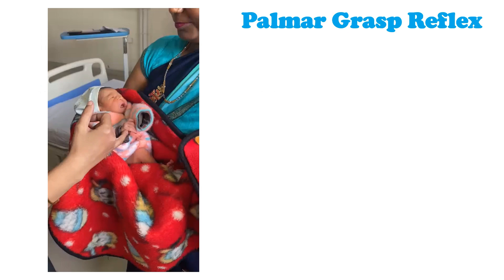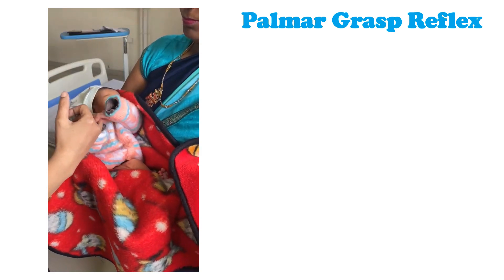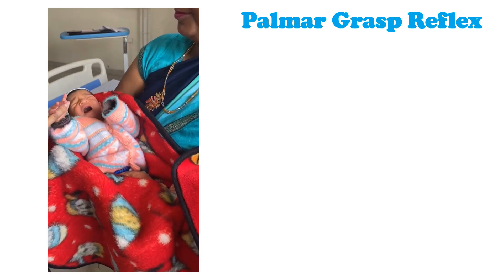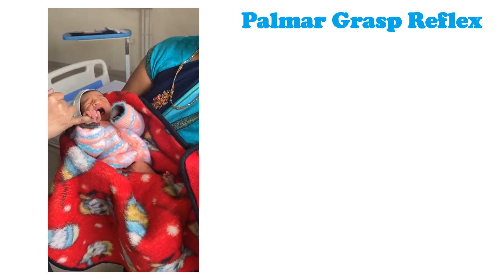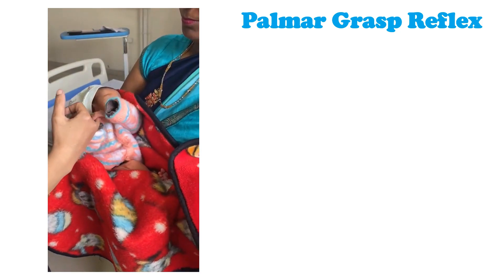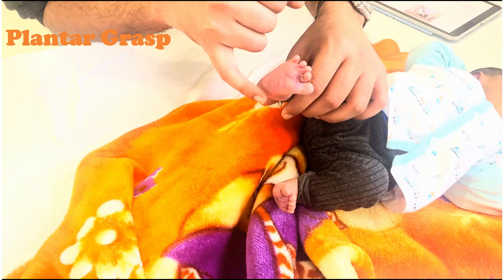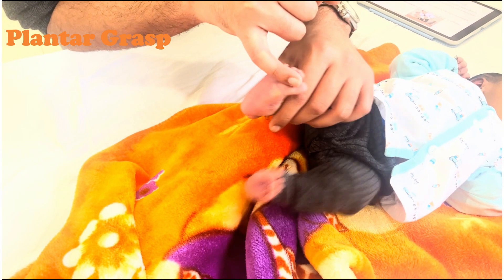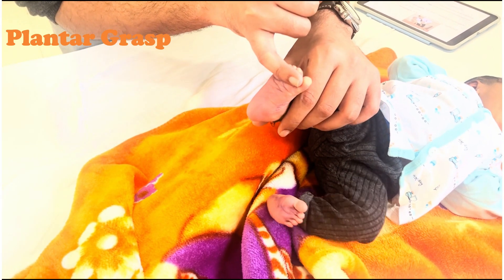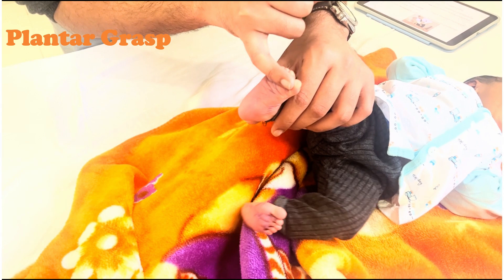In the palmar grasp reflex, when the baby's palm is touched, the baby's fingers close around or grasp that object like this. The palmar grasp reflex assists the baby to cling or grab on tight. Likewise, in the plantar grasp reflex, the baby incurves his toes when you touch the ventrum of his foot, especially on the medial aspect like this. This isn't very classical in this video but at least you know the method.